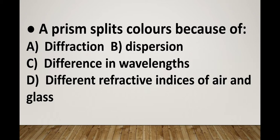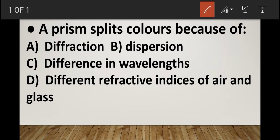As we know, a prism splits light — means white light — into its seven colors due to dispersion. Dispersion is the process of splitting white light into its seven colors while passing through a prism. So the correct answer will be b) dispersion. A prism splits colors because of dispersion.